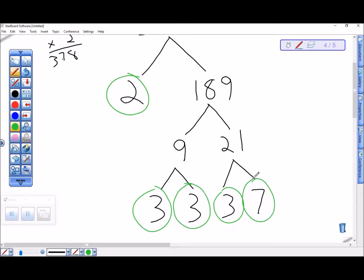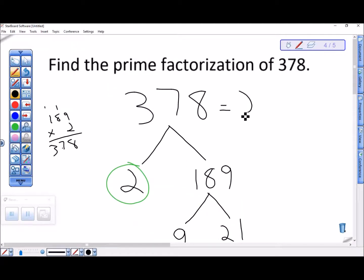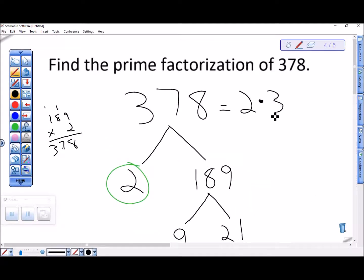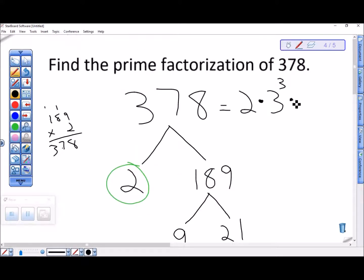So let's see what we've got here. I've got a 2. I've got one, two, three 3's, so times 3 cubed. And then I have one 7. So 378 is 2 times 3 cubed times 7.